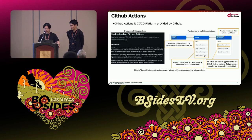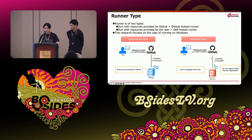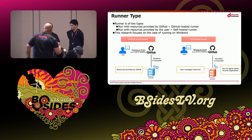In our presentation, runner and action are important, so I will explain in a little more detail. There are two types of runner: GitHub-hosted runner and self-hosted runner. The difference is the resource owner. GitHub-hosted runners use resources provided by GitHub, while self-hosted runners use resources provided by the user. Runners support some operating systems — macOS, Linux, Windows — but our research focused on Windows.